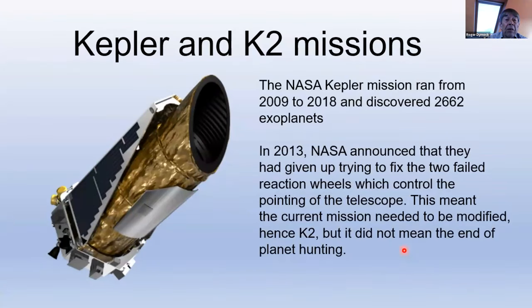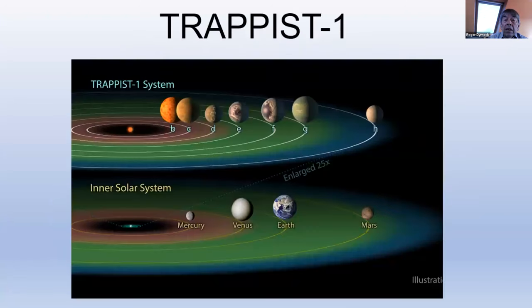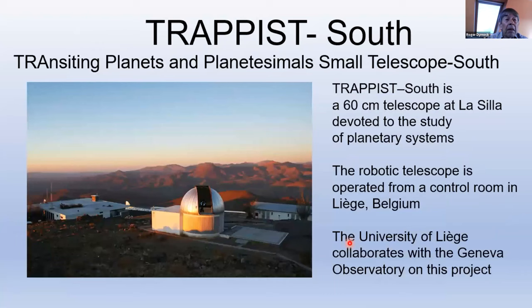Kepler and its revised mission K2 ran for nine years, from 2009 to 2018. Awful lot of data there to be analyzed. Transit timing variations can be used to measure the masses of exoplanets in compact multiple-planet systems, such as TRAPPIST-1. This slide compares the TRAPPIST-1 system with the inner solar system. TRAPPIST actually stands for Transiting Planets and Planetesimals Small Telescope South. It's a 60-centimeter telescope at La Silla and is devoted entirely to the study of planetary systems. A lot of telescopes are used for exoplanet work, but not necessarily full-time.